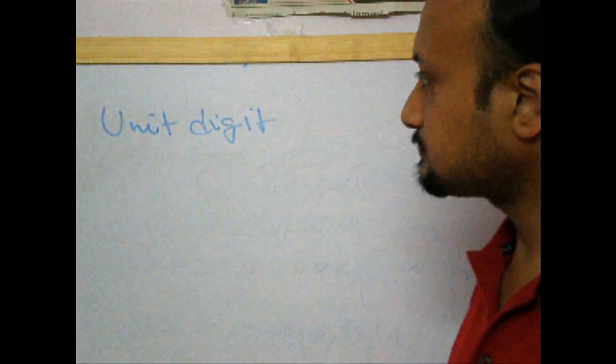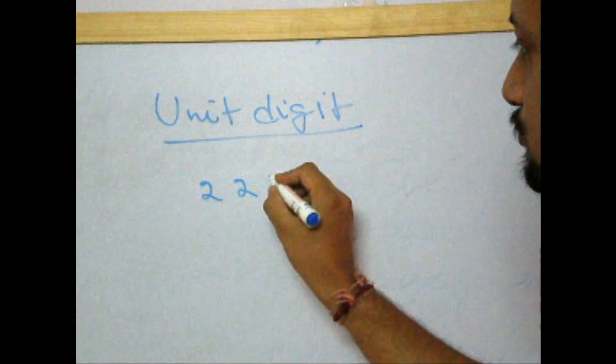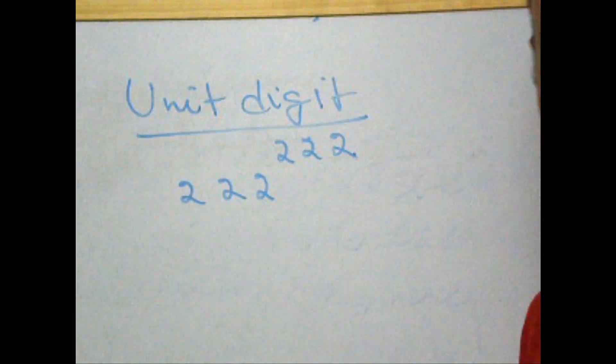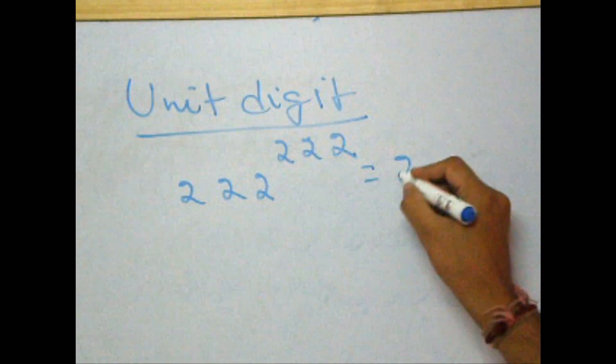Say, we have a question that is 222 to the power of 222, and we want to find out its unit digit. Let's understand one thing first, that 222 to the power of 222 is basically a product. That is, product of 222 with itself 222 times.